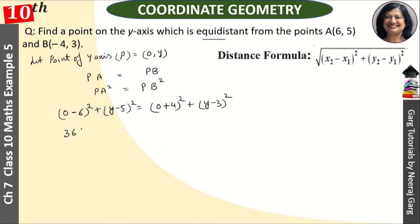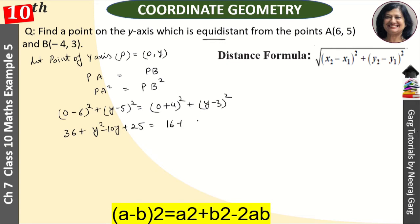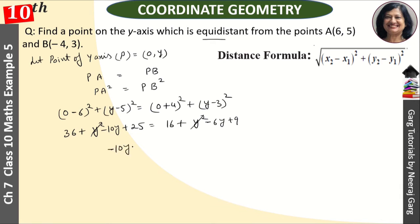This equals 36 + y² - 10y + 25 = 16 + y² - 6y + 9. y² cancels on both sides. -10y + 36 + 25 = -6y + 25, which gives us 61 = -6y + 25.